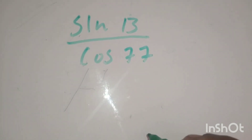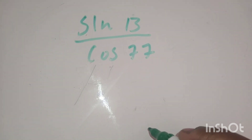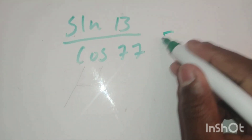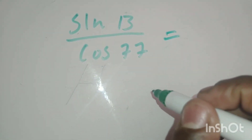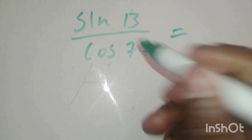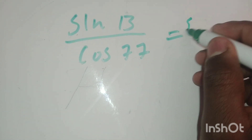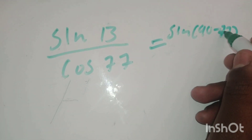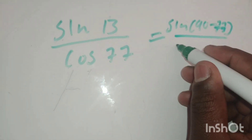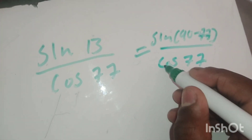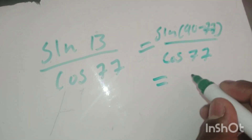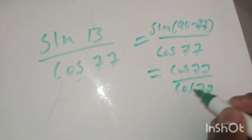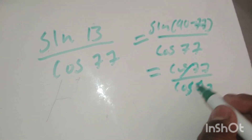Here's another example: sin(13) over cos(77). You can pause the video and attempt it. We see 13 plus 77 is 90, so we can use co-ratios. Let me change the top: sin(13) is the same as sin(90 minus 77). Notice it still gives me 13 back — I just changed how it looks. Since sin(90 minus theta) is cos(theta), this becomes cos(77). Then we have cos(77) over cos(77), which cancels and gives you 1.